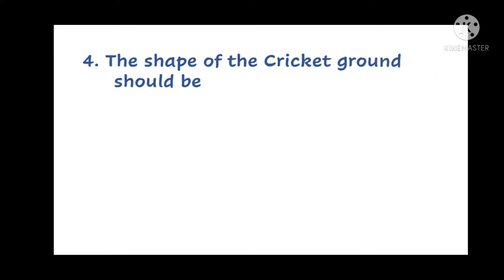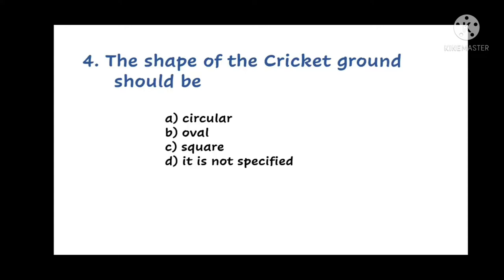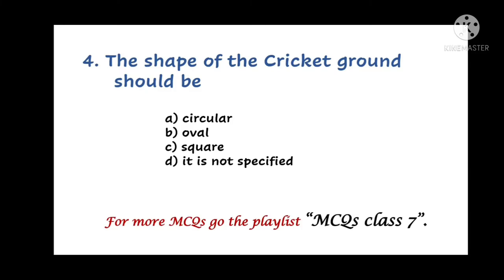Question number 4. The shape of the cricket ground should be: A. Circular, B. Oval, C. Square, or D. It is not specified. If you have not seen the video on explanation of the chapter, the link is given in the description box — you can go through the link. And if you want to see more MCQs on the chapters of class 7, you can click on the playlist MCQs class 7.